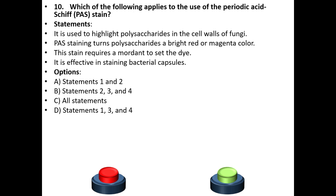Tenth question. Which of the following applies to the use of the periodic acid-Schiff (PAS) stain? Statements: It is used to highlight polysaccharides in the cell walls of fungi. PAS staining turns polysaccharides a bright red or magenta color. This stain requires a mordant to set the dye. It is effective in staining bacterial capsules.